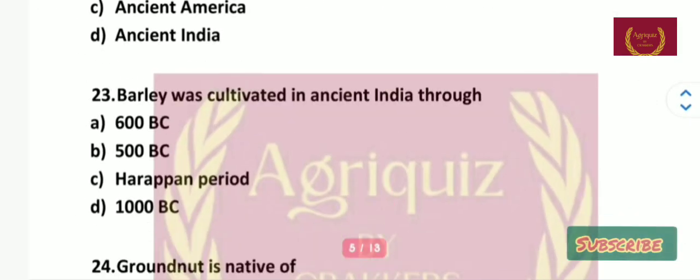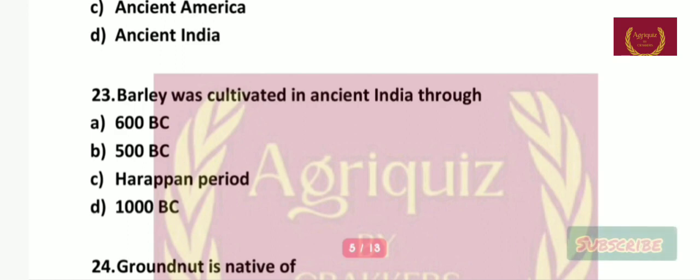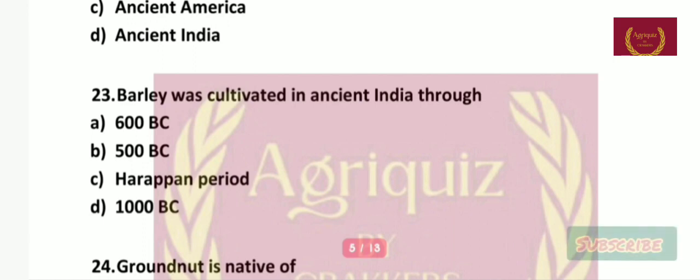Question number 23: The barley variety was cultivated in ancient India through — 600 BC, 500 BC, the Harappan period, or 1000 BC? The right answer is the Harappan period.